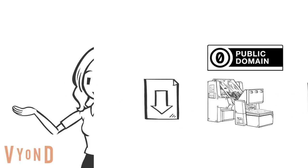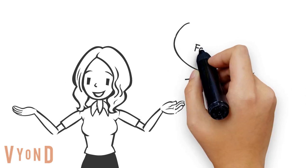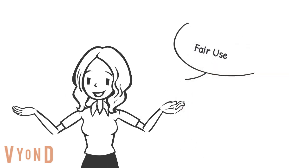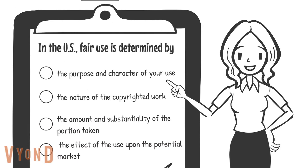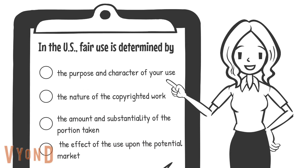Now let's talk about fair use. In the United States, fair use is determined by the purpose and character of your use, the nature of the copyrighted work, the amount and substantiality of the portion taken, and the effect of the use upon the potential market.